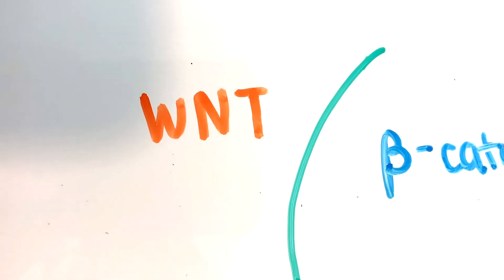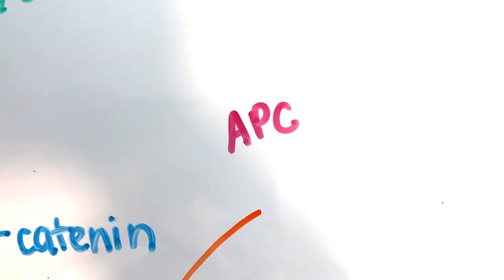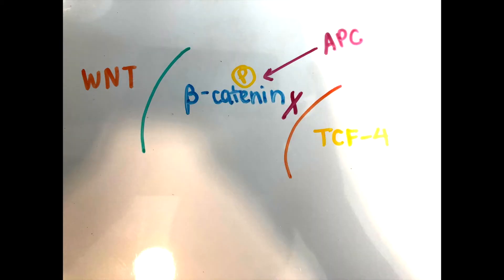As you can see, there's WNT, beta-catenin, APC, and TCF-4, which is T-cell factor 4. What normally happens is APC, the tumor suppressor gene, phosphorylates beta-catenin so that it is ubiquitinated and subsequently destroyed by the proteasome. Beta-catenin is a multifunctional protein that is involved in transduction of WNT signals. So APC prevents beta-catenin from binding to TCF-4.